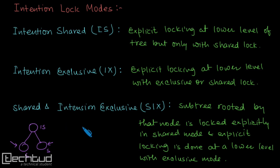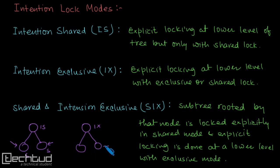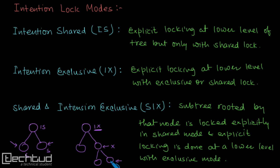The next intention mode lock is Intention Exclusive (IX). If a node is locked with intention exclusive, it means that at lower levels, nodes may be explicitly locked with exclusive mode. When I say explicit lock, I mean I directly apply a lock on a node — that is explicit locking. If that node has children, those children are automatically locked — that is implicit locking, because we have not applied a lock directly on the children.